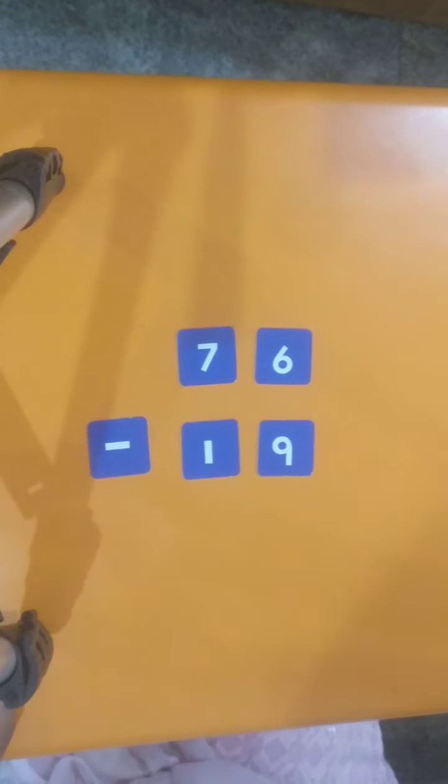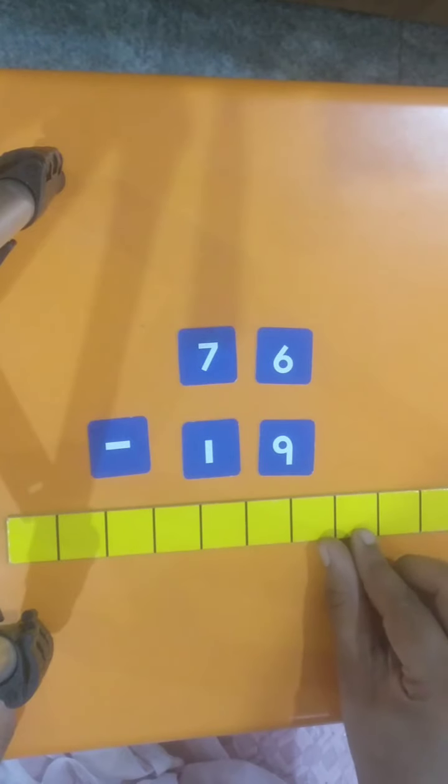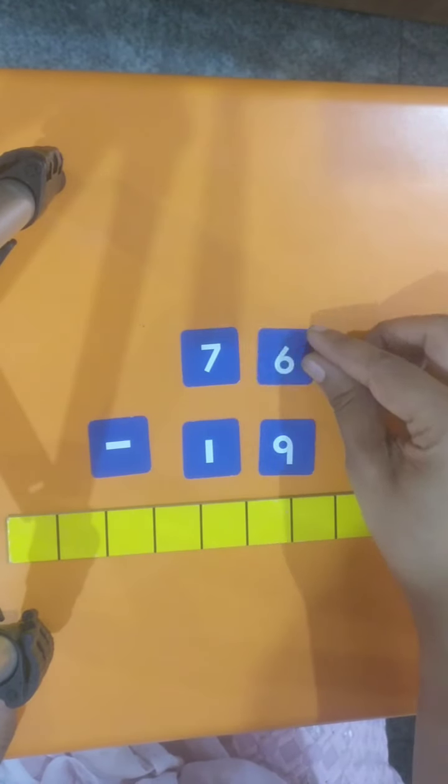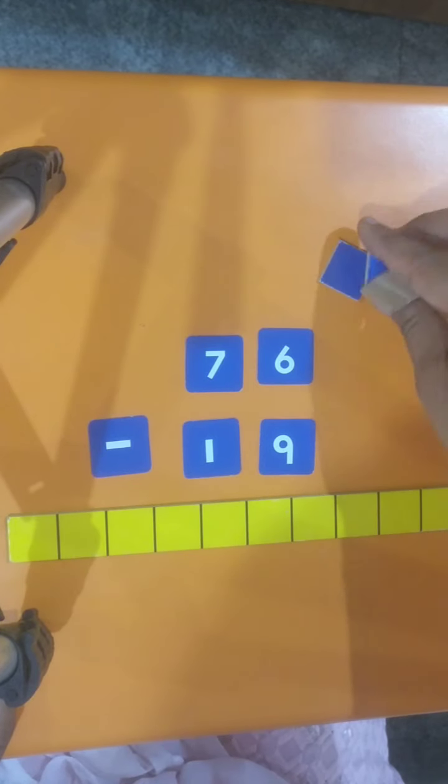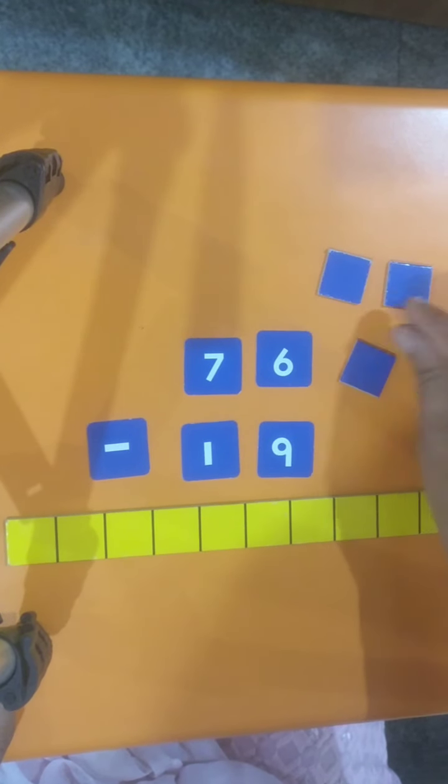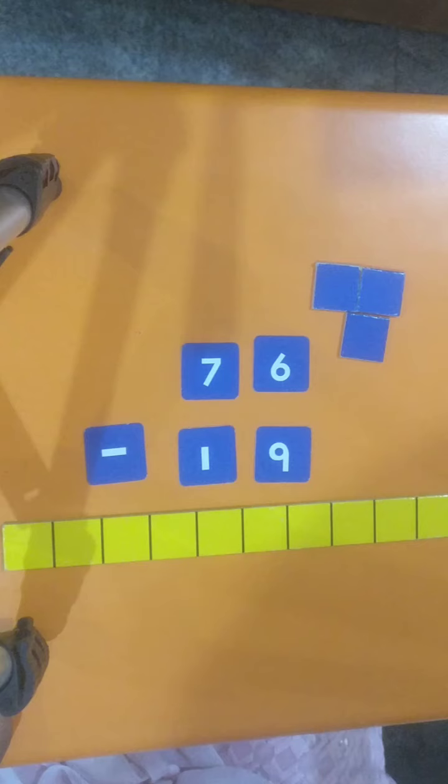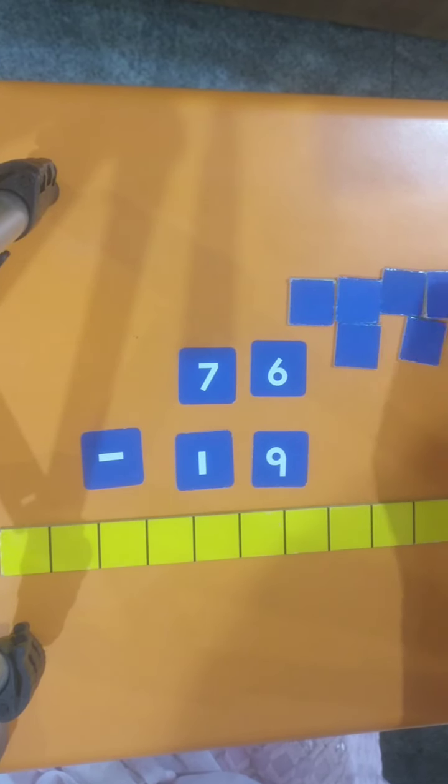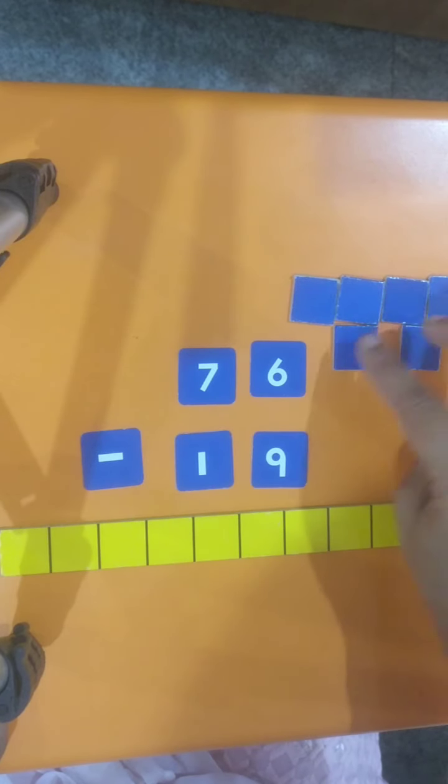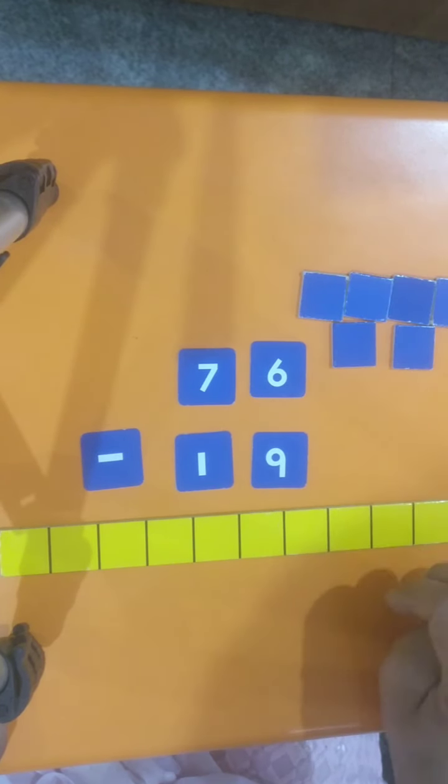Now let's start finding the answer. First I have 6 in 1's place. So, let me take 6 blocks here. 1, 2, 3, 4, 5, 6. I have 6 blocks here, and I have to take 9 blocks out.